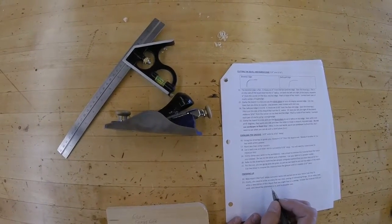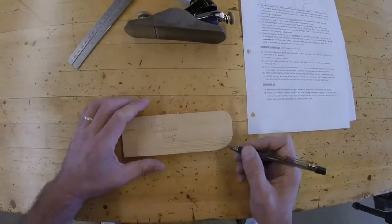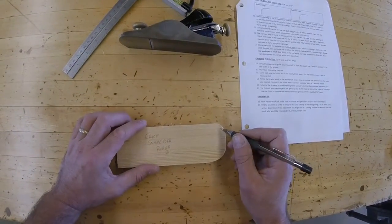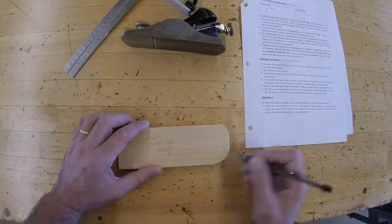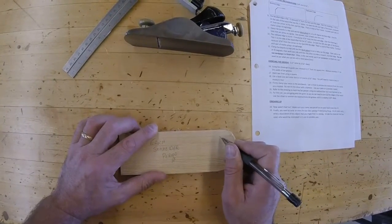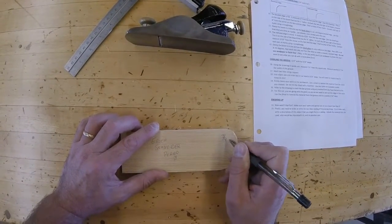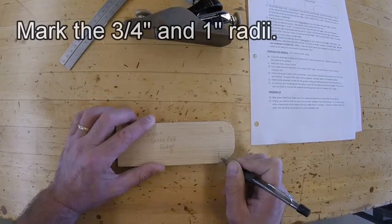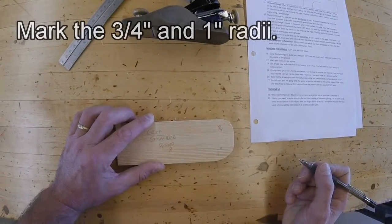This is on the side of the board that has the 1 inch radius. Let's look at our board. There's two radii - the smaller and the bigger. When I look at my drawings, I see that the smaller one is 3 fourths of an inch, and the bigger one is 1 inch. I'm going to go ahead and mark those now.